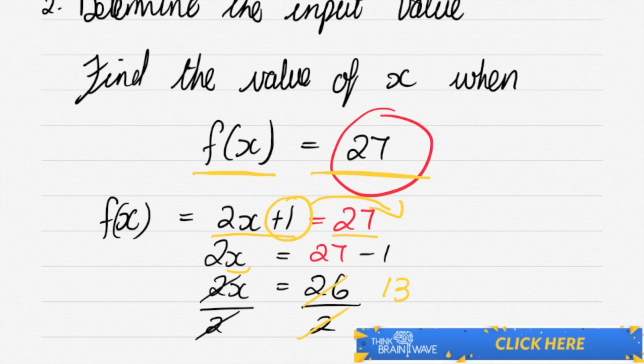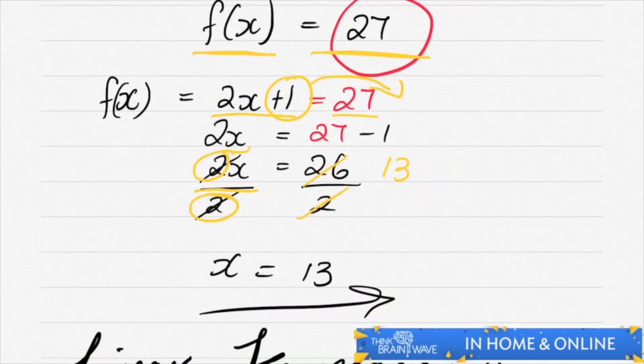And you get twenty seven minus one, you divide the left hand side by two, cancel out the two over here, you do the same to the right hand side, and you're left with thirteen. Easy game.